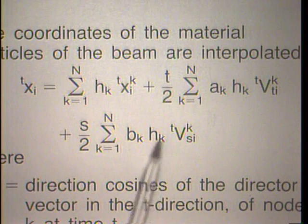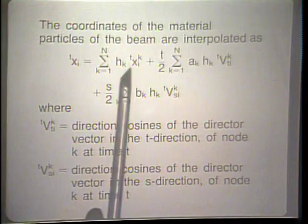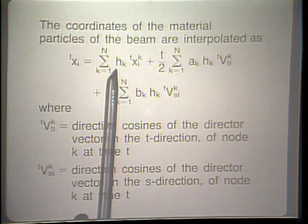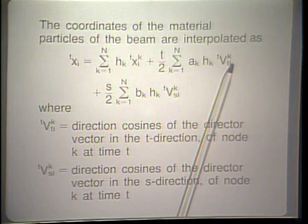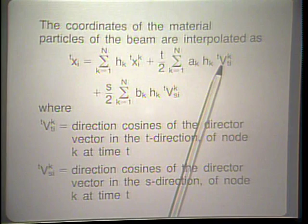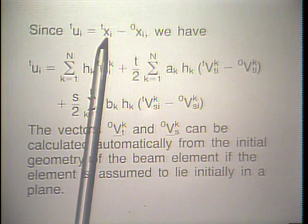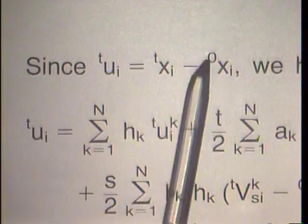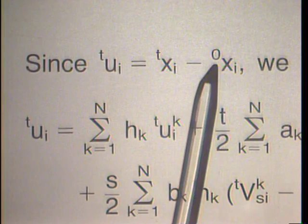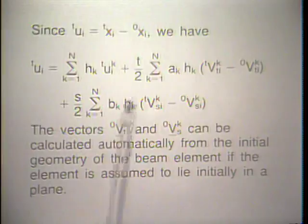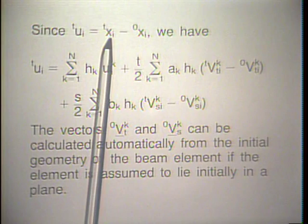This equation is very similar to the one used in the shell element formulation, except there we interpolated over a two-dimensional domain over the shell mid-surface, whereas now we only run along the neutral axis of the beam. Since the displacements can be directly obtained from the geometry interpolation at time t minus the geometry interpolation at time 0, we obtain tui by applying our geometry interpolation at time t and at time 0 and subtracting.